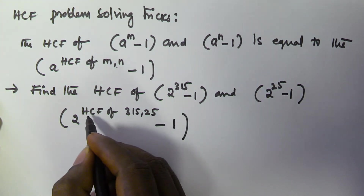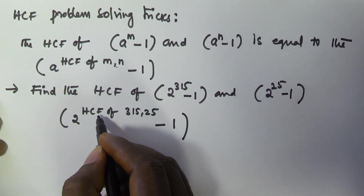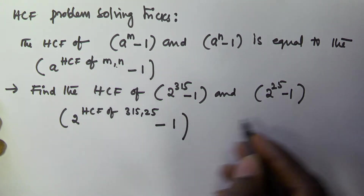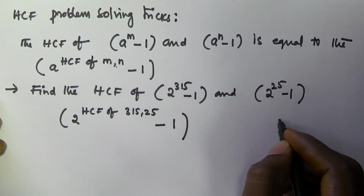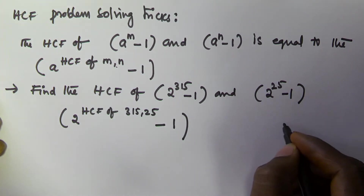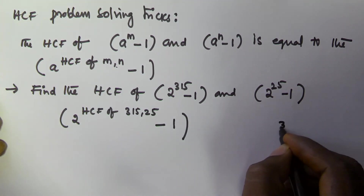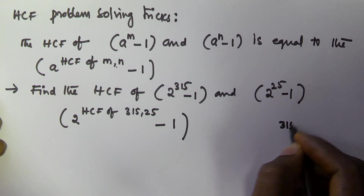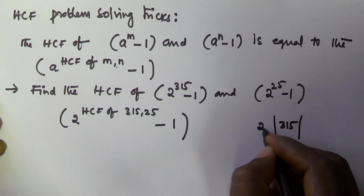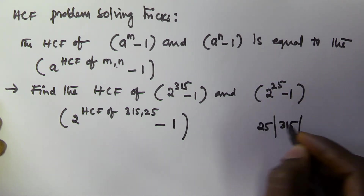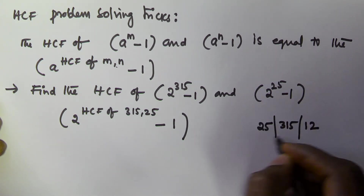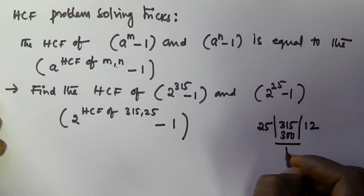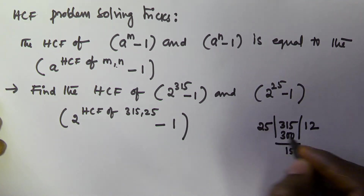So now we have to find the HCF of 315 and 25. To find the HCF of 315 and 25, we divide the bigger number by the smaller number. 315 divided by 25 gives us a remainder of 15.